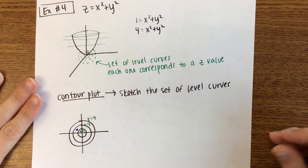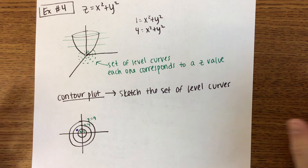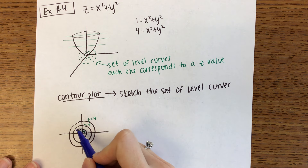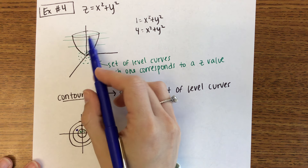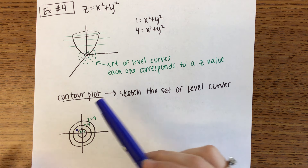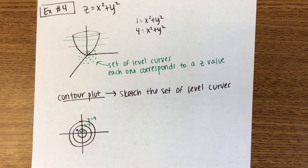A contour plot is when you sketch the set of level curves. For z equals x squared plus y squared: if z equals 1 we get a circle of radius 1, z equals 4 gives radius 2, z equals 9 gives radius 3. Label each level curve with its z value. When asked about a point on the contour plot — as you move toward the origin, z is decreasing; moving away, z increases.